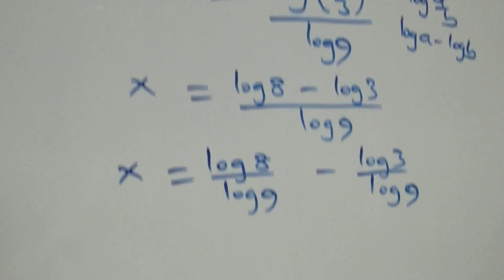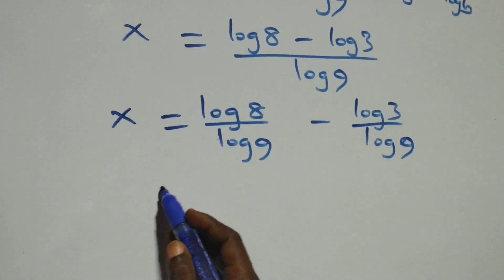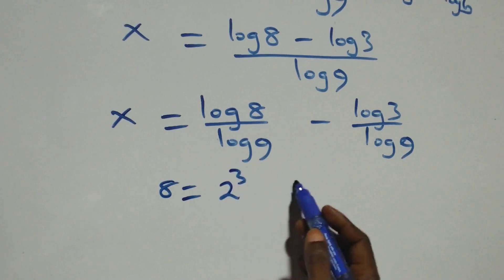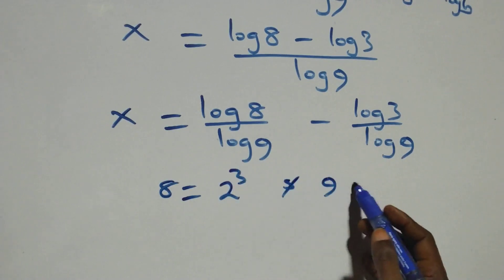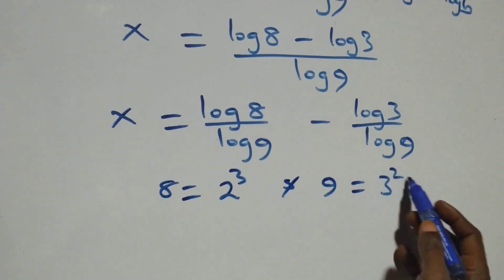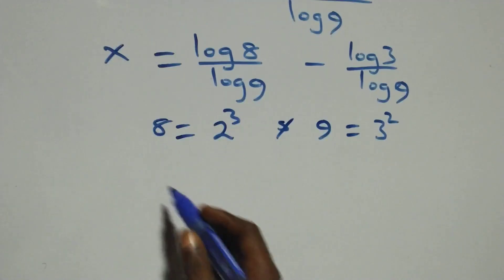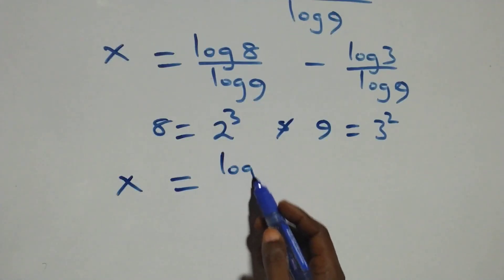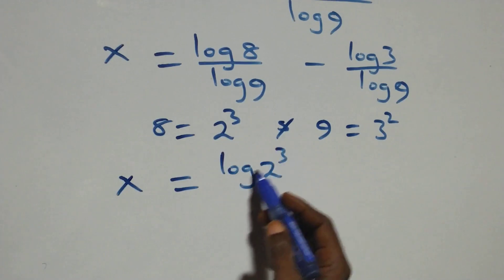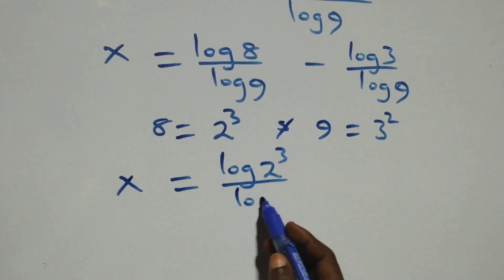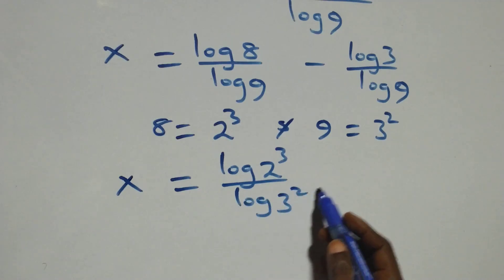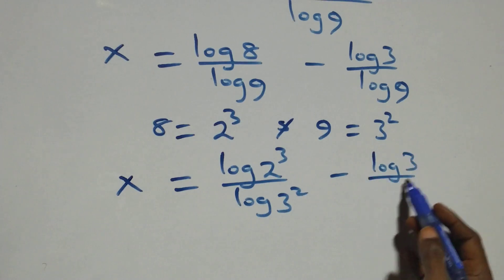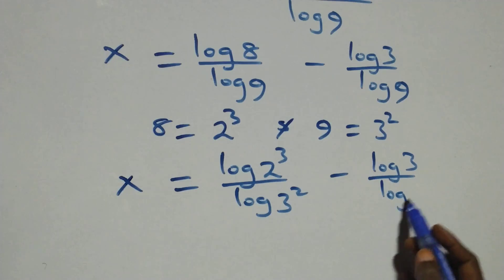At this point, we can express eight as two times two times two, which is two cubed, and nine as three times three, which is three squared. So what we have becomes x equals log of two cubed over log of three squared, minus log three over log of three squared.